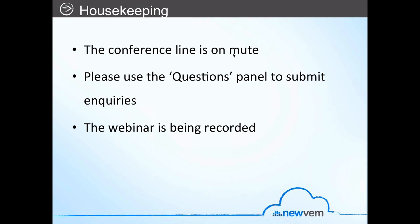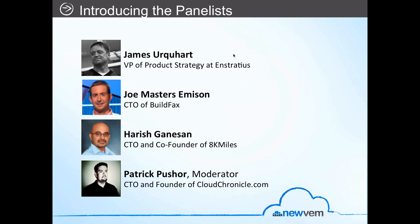With that said, let's get to introducing our fantastic panelists. First up, we have James Urquhart, VP of Product Strategy at Instratius. Thanks very much for the invitation. I'm Vice President of Product Strategy for Instratius, one of the leading companies in the cloud management space. We help enterprises consume infrastructure service capabilities from Amazon and over 20 other clouds consistently, with governance, security, and automation applied. I'm also a contributor to GigaOM and former author of the Wisdom of Clouds blog on CNET, where I was named one of the top most influential cloud bloggers.